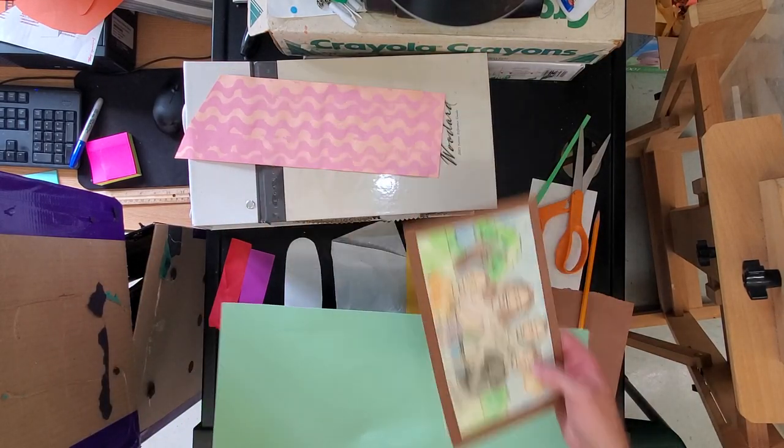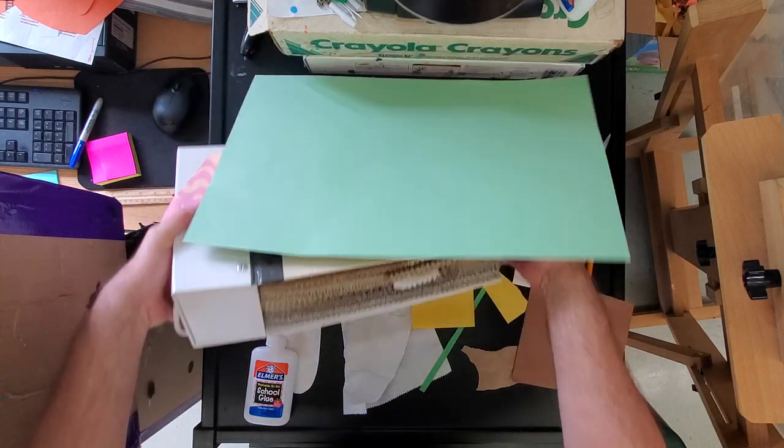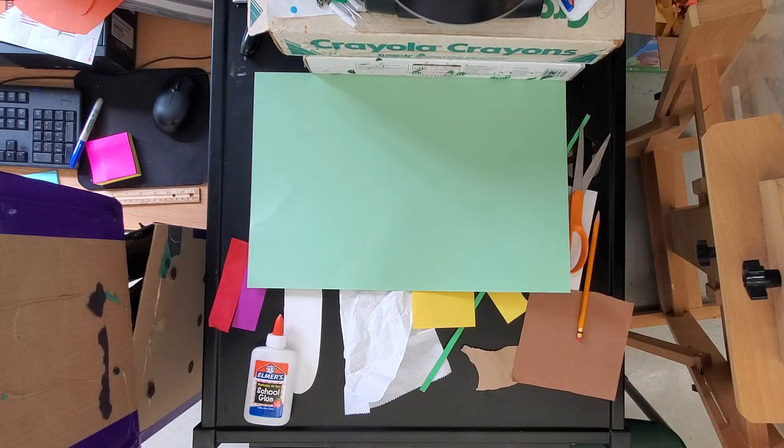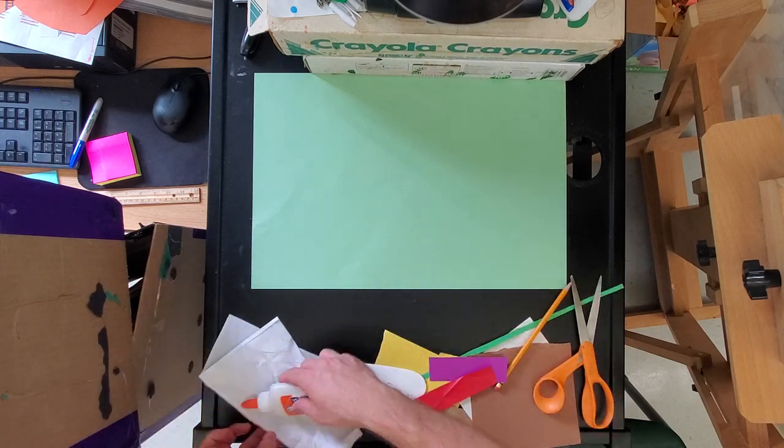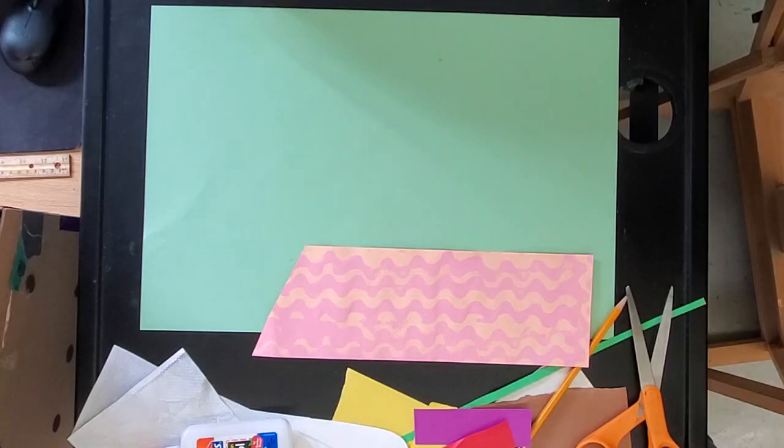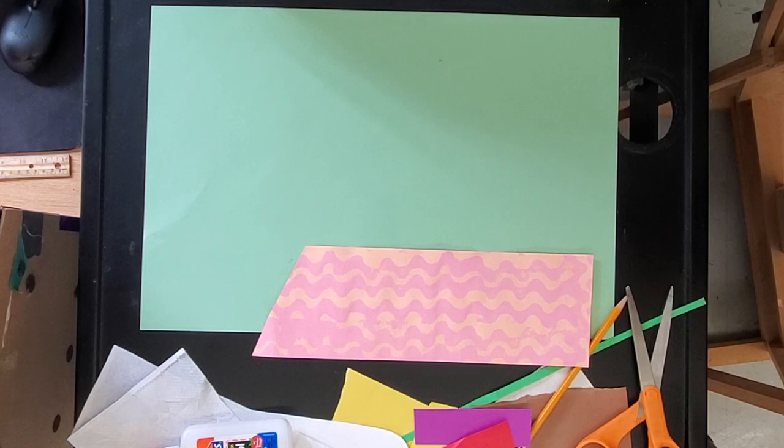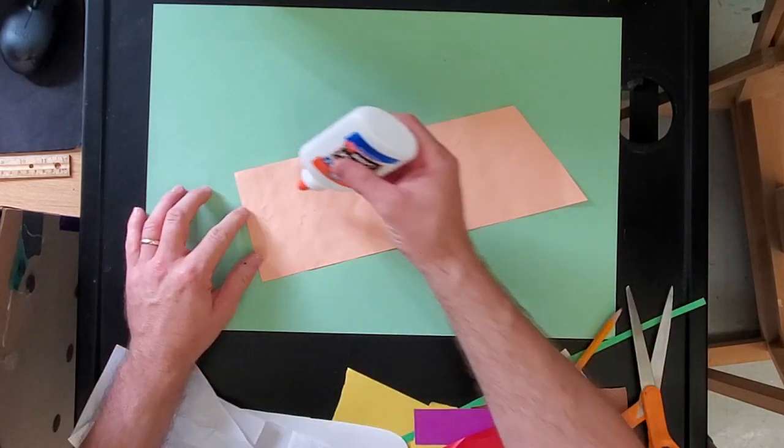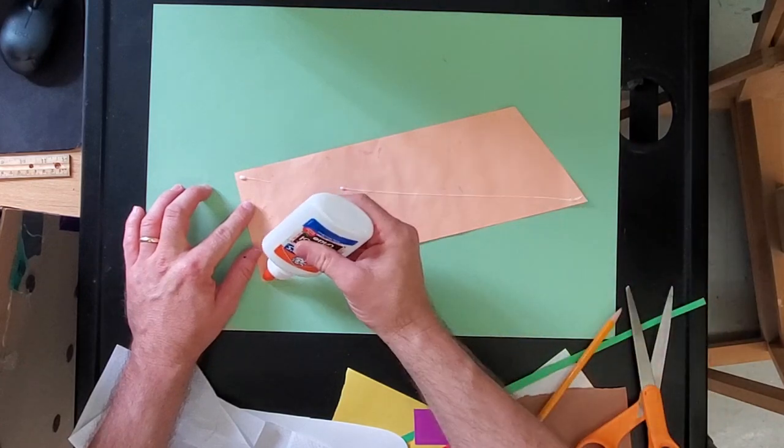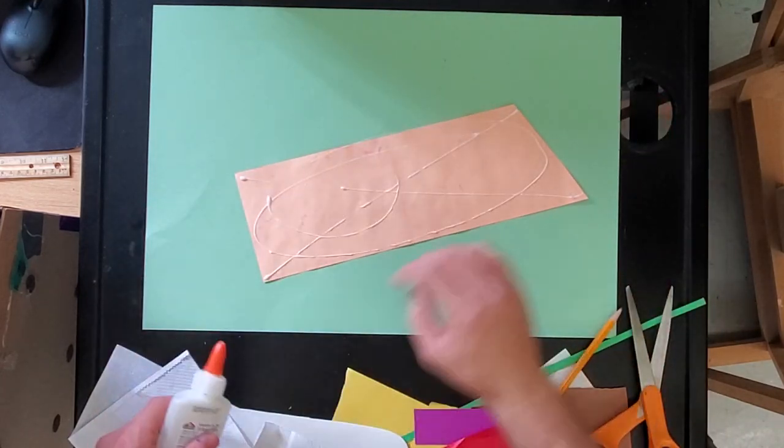So the first thing I want you to do, we are going to glue what looks like a pattern. It's a tablecloth. You're going to glue the tablecloth in the bottom right hand corner. But this time I don't want any background paper showing. This butts up right to the bottom corner, right to the edge of the paper. The reason we're doing that is because of the way the picture is cropped.